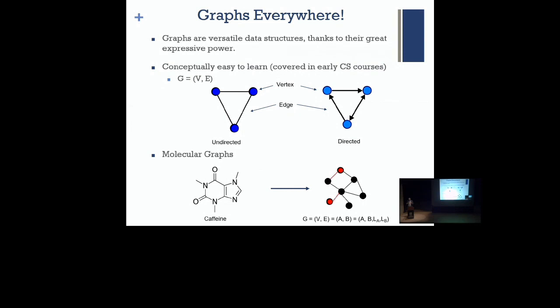Graphs are versatile data structures with very great expressive power. Any undergrad student in computer science will tell you that a graph is just a set of vertices and edges that can be directed or undirected. When we talk about molecular structures, we do the same but think about molecular graphs. We have a molecule on the left, and on the right we have a graph, where we talk about atoms and bonds instead of edges and vertices.